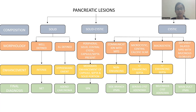If the lesion is solid-cystic with peripheral solid and central cystic areas, with a capsule or septa showing moderate enhancement, it is suggestive of solid pseudopapillary neoplasm. If the lesion is cystic with communication with the main pancreatic duct and is non-enhancing, it is more in favor of side-branch IPMN. If the lesion is microcystic with a central calcified scar and enhancing or non-enhancing septa, it favors serous cystadenoma. If the lesion is macrocystic with enhancing septa, it is mucinous cystadenoma. If the cystic lesion shows diffusely dilated main pancreatic duct with mucinous globules, it is suggestive of main duct IPMN.